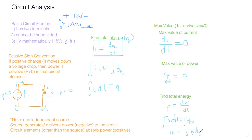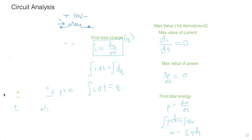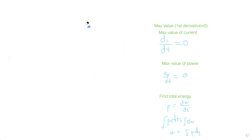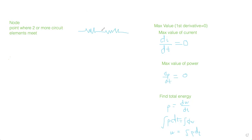Now let's get into basic circuit definitions including nodes and Kirchhoff's laws. A node is a point where two or more circuit elements meet. For example, if you have two resistors connected at a point, that connection point is a node.